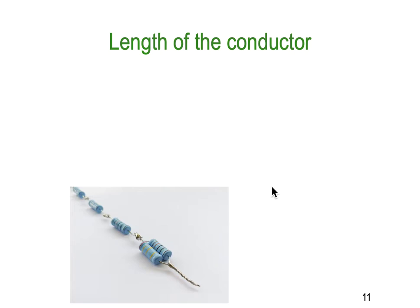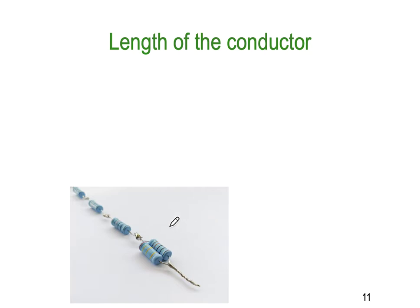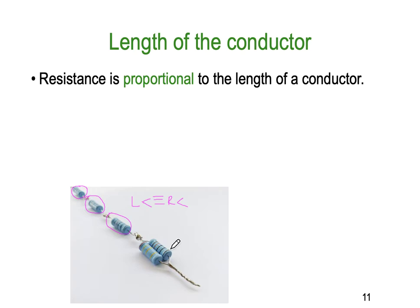Conductor length is one of the main factors that affects resistance. The reason we compare it to a set of resistors is that it's like adding resistors one after the other in series. So as length increases, resistance also increases — those two things equate. Three horizontal lines means they equate; they are not directly equal but they are proportional. Resistance is proportional to the length of the conductor.